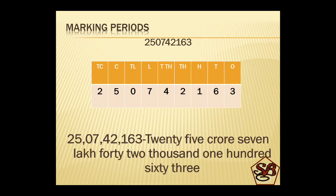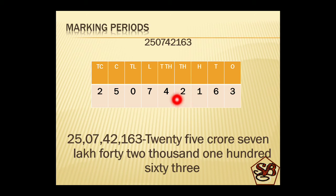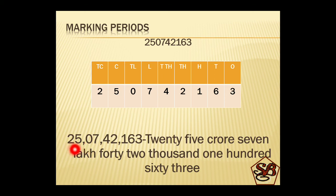Let's see how this is done — marking the periods. We put the number in the place value chart starting from the rightmost digit in the ones place: three, six, one, two, four, seven, zero, five and two. The first period contains three digits from the right — ones, tens, hundreds — then a comma. Then thousands, ten thousands — comma. Then lakhs, ten lakhs — comma. Then crore and ten crore. So the number is 25 crore, 7 lakh, 42 thousand, one hundred and sixty three.